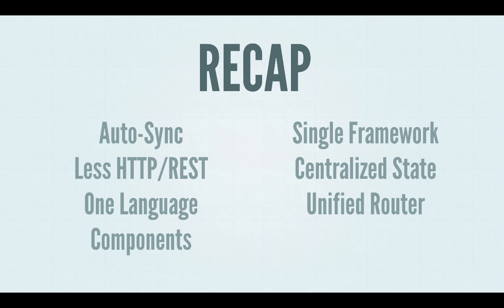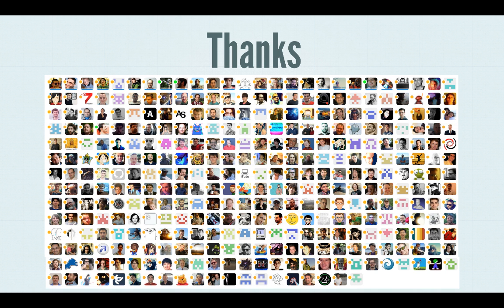Just a quick recap: Volt gives you automatic synchronization, so you don't have to build all these REST APIs by hand — under the hood, we use WebSockets so that the data automatically updates. It lets you write in one language for both the client and the server. You can isolate parts of your app with components so they're easily reusable. It's a single framework, so you don't have to learn one framework for the backend and one for the server. Our collections let you centralize all of your application state, and since views are declarative, you're not worried about syncing state at any point — it's all handled for you. We also have a unified router that makes it easy to map parts of your application state into the URL. We have a pretty active community, so if you're curious about learning more about Volt, be sure to check out the other videos.